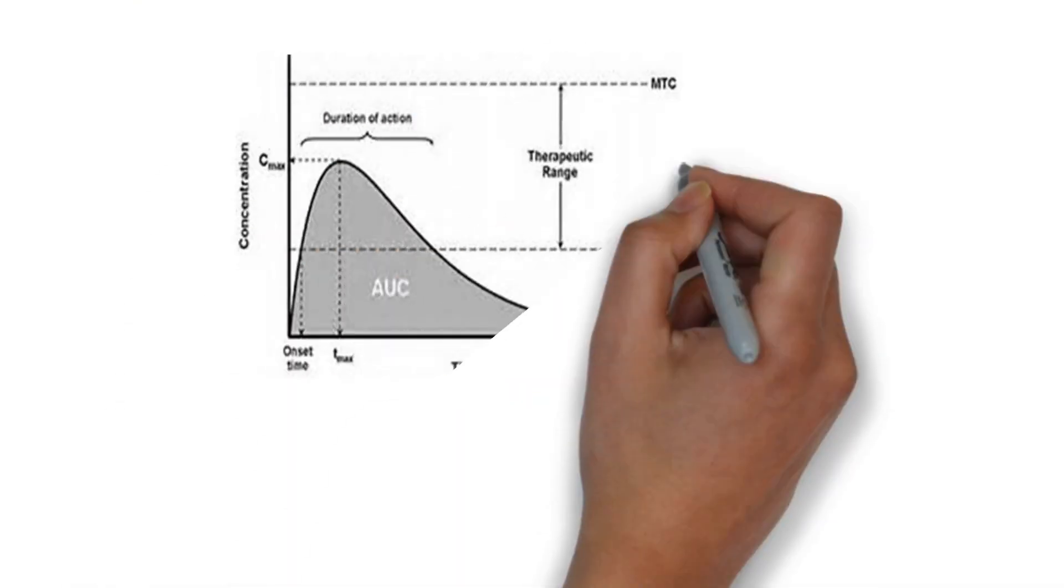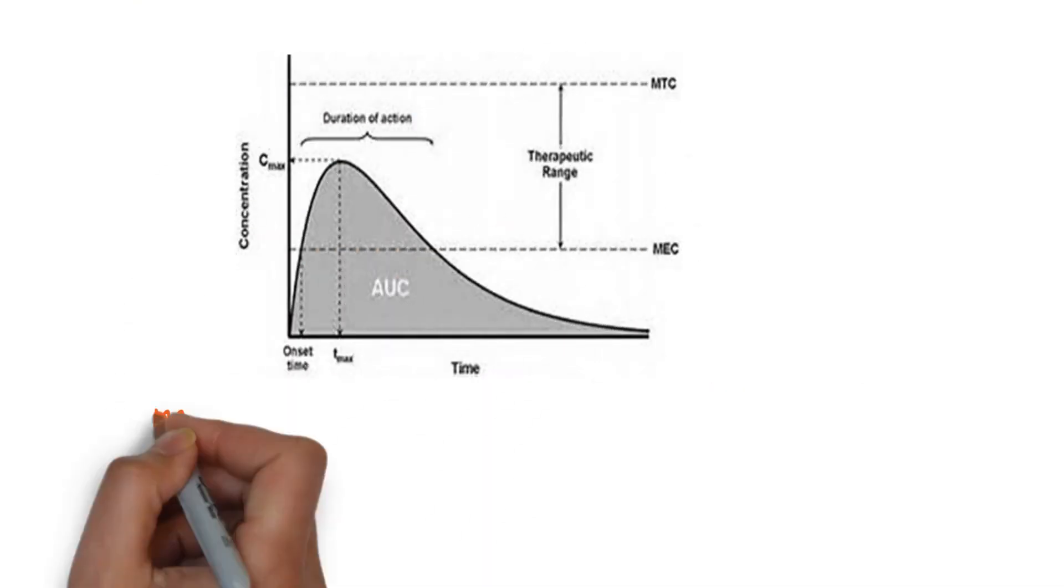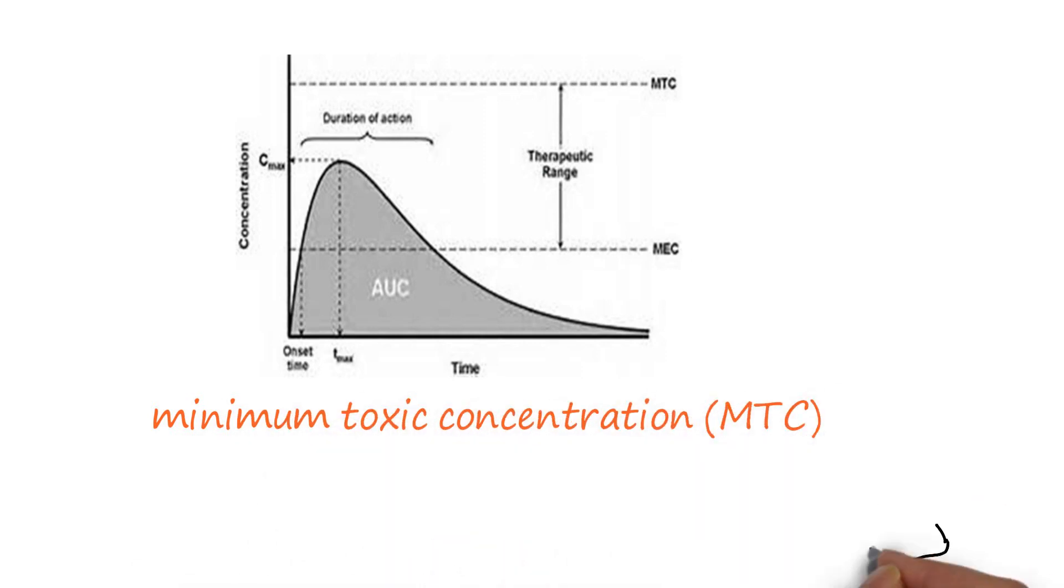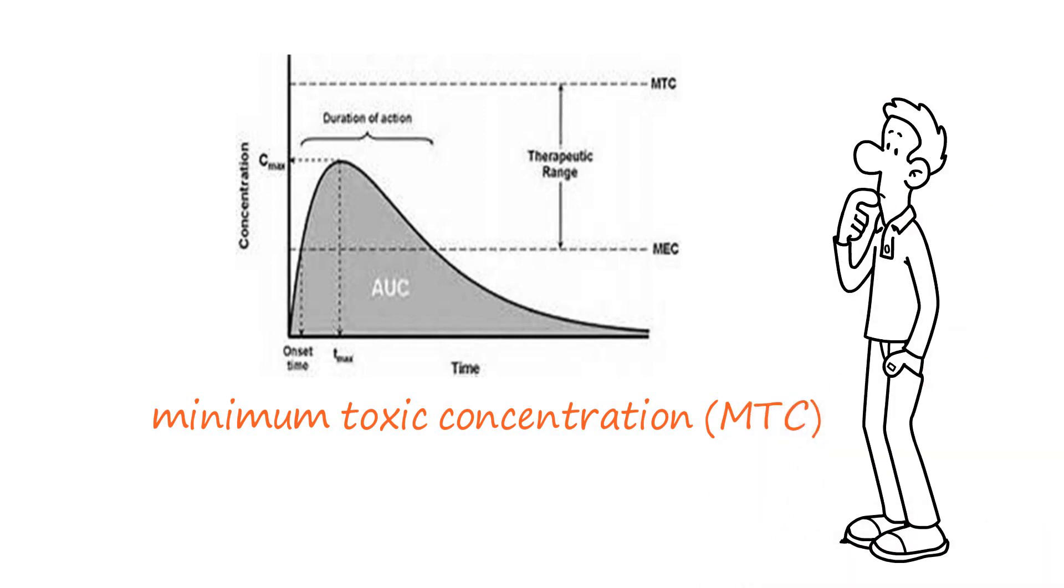The minimum toxic concentration, MTC, is the upper limit of therapeutic window. Drug concentrations above the MTC increase the risk of undesired effects. Therapeutic window is the blood concentration range between MEC and MTC.